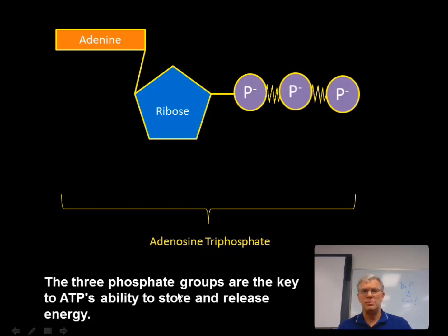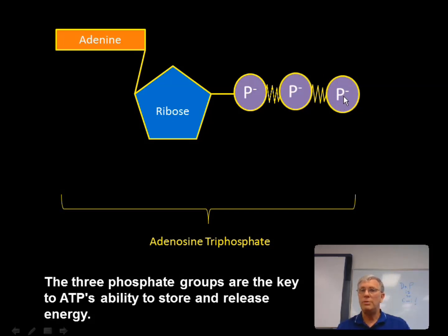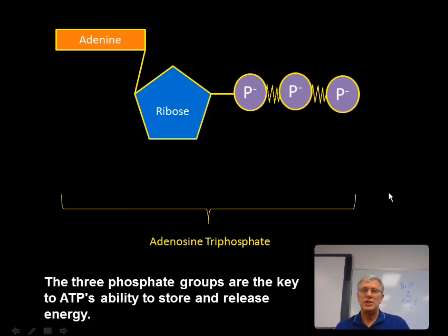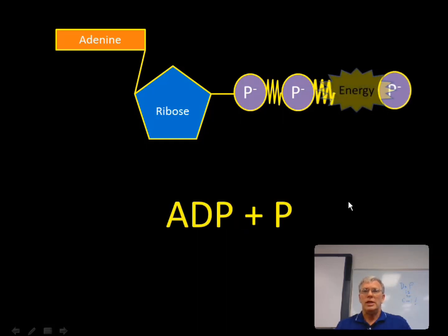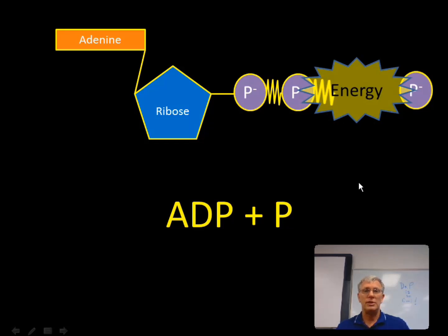It's these three phosphate groups that are key to ATP's ability to store energy. Notice that these phosphate groups are negatively charged. Molecules that have the same charge repel each other, yet these molecules are being held together. In order for them to be held together when they would normally want to be pushed apart, these bonds must be very strong — they're referred to as very high energy bonds. So when those bonds are broken, energy can be released and used as an energy source within the cell. When this third phosphate is broken off, it is like a spring being released and energy is released, which can be used by the cell.